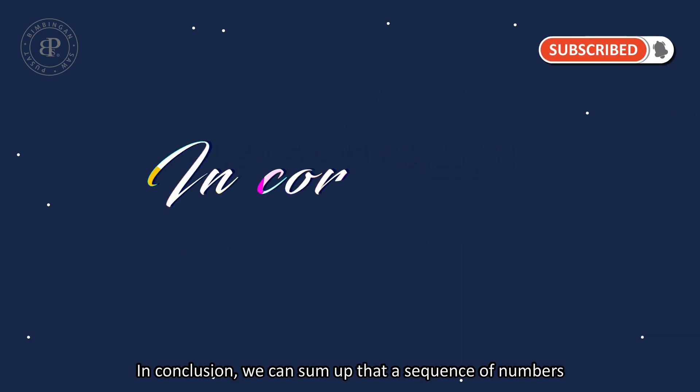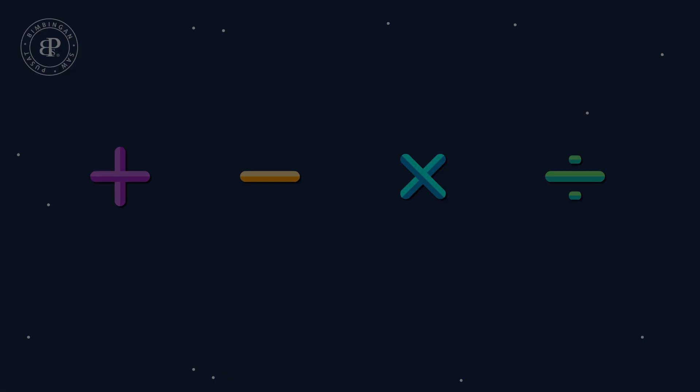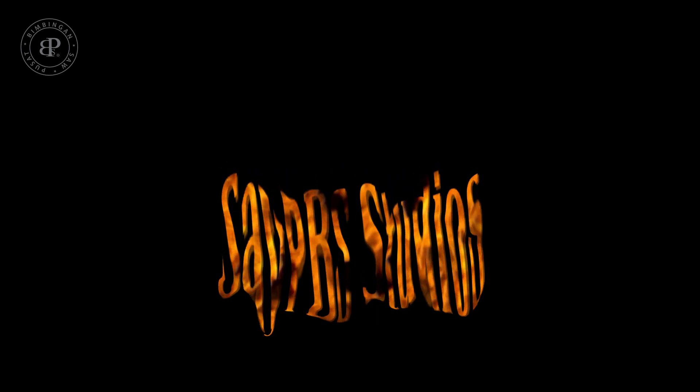In conclusion, we can sum up that a sequence of numbers can be obtained by adding, subtracting, multiplying, or dividing them. The pattern starts with a sequence of numbers. Thank you.